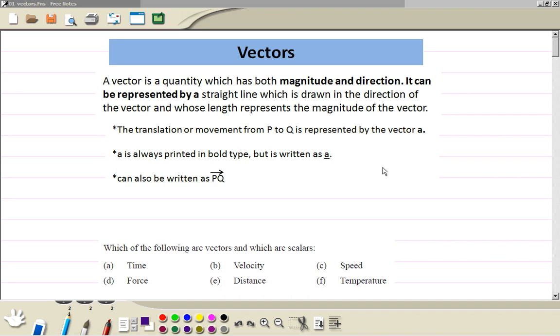Vectors. Vectors are quantities which have magnitude and direction, and scalar quantities which have only magnitude. You can always represent a translation by a vector.